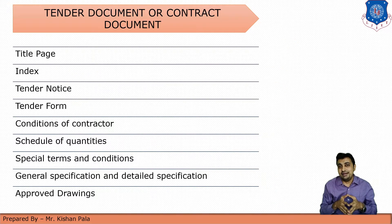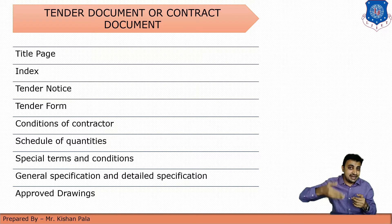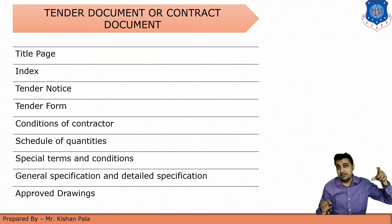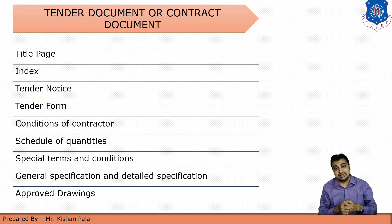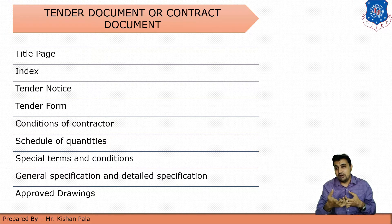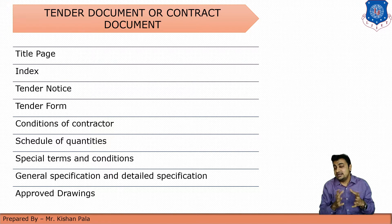Now let us discuss about tender documents and contract documents. In the tender document and contract document, there should be mentioned: the title page, index, tender notice, conditions of contractor — including special conditions and general conditions — and schedule of quantities, because the total quantity of the work will help the contractor quote rates. Next is special terms and conditions, if required for that type of work.